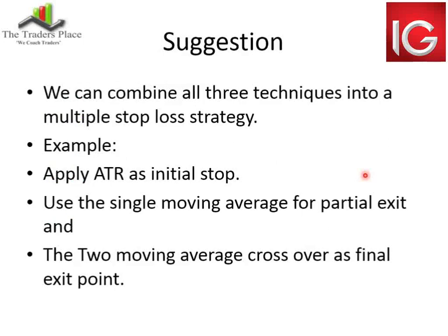I'm going to make a suggestion: we can combine all three techniques into a multiple stop-loss strategy. What I have done in the past is apply average true range as the initial stop. If the 21/50 cross-up gives me a buy signal, I immediately apply ATR as a stop. If the market goes through the ATR stop, I close the whole position. Once the trade starts to work, I can use the single moving average for a partial exit — if the market's been going up for a month and pulls back below the 15 EMA, simply close off half the position. As a final exit, use two moving averages crossing over to get out of the trade entirely.